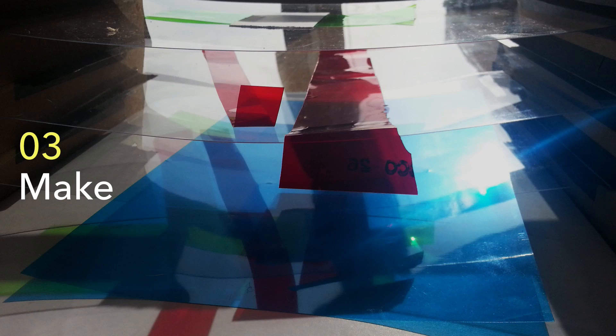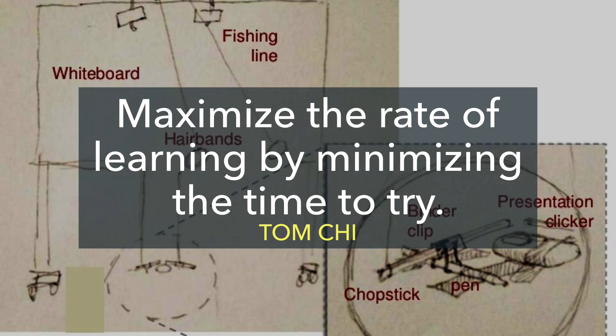That brings us to the last phase: make. Making is incredibly important, and you don't have to go fancy like the Airbus prototype. We can start with really basic things. Tom Chi from Google Prototyping X famously prototyped Google Glass with just coat wires, fishing line, and projectors — nothing expensive, really cheap — just to try it out, to see what would happen, to see what they should be building.